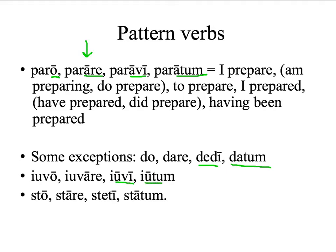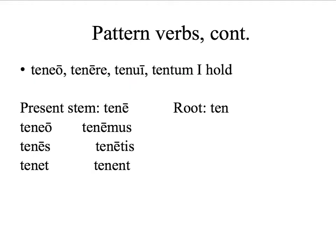Some verbs are irregular, such as sto, stare, steti. Second conjugation: teneo, tenere, tenui, and then tentum — which might originally have had a vowel in there, tenetum, which dropped out — is a typical second conjugation verb. Again, note the pattern vowel.